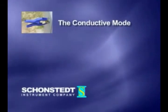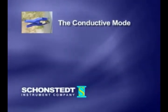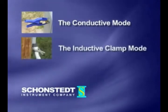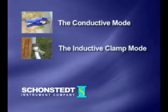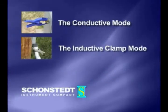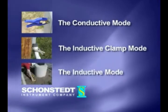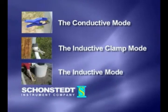There are three basic ways to apply a signal to the utility. In the conductive mode, by connecting directly to the conductor with clips and a ground stake. In the inductive clamp mode, by using a coupler or clamp to clamp around the conductor. And in the inductive mode, by setting the transmitter or inductive antenna over the conductor.